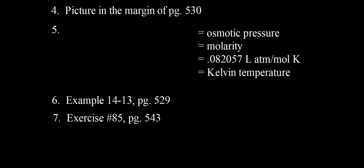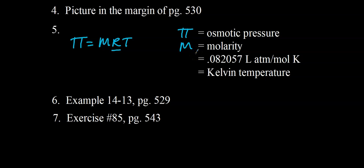Here is the mathematical formula for osmotic pressure: π = MRT, where π is the osmotic pressure, M is the molar concentration (note: molarity, not molality), R is the ideal gas constant, and T is temperature in Kelvin. R can be 0.0821 L·atm/mol·K — giving pressure in atmospheres — or 62.4 for torr, or 8.31 for kilopascals.